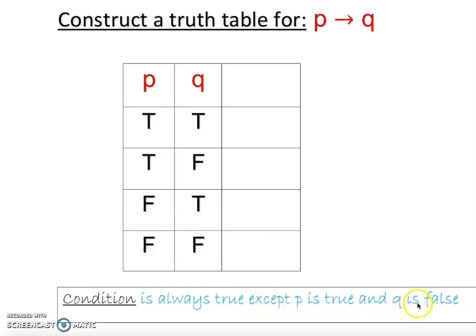This is the combination we have to find first. Let me write this down: if p is true and q is false, that is going to give you false. Otherwise, everything else is going to be true.